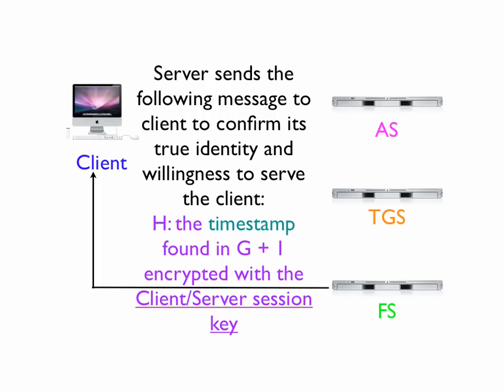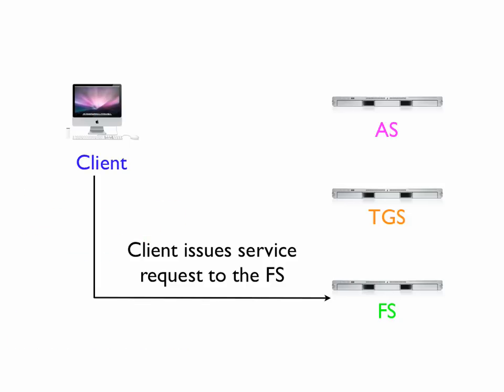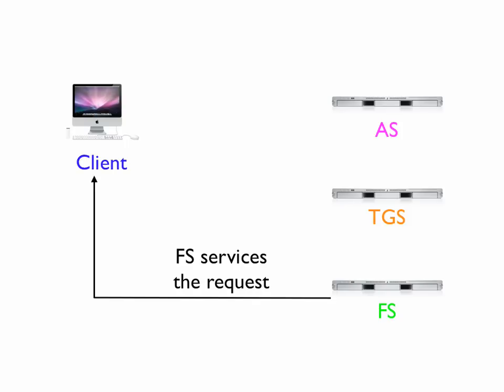If it hasn't expired and the client IDs match, the server sends a message to the client to confirm its true identity — essentially saying: yes, I'm the file server and I'm ready to serve you. The file server sends the timestamp it received plus one, encrypted with the client-server session key. The client knows that any message from the file server must be timestamp plus one encrypted with the client-server session key, so if those conditions are met, the client will trust the file server. Once the client trusts the file server, it can issue service requests and the file server will service them.